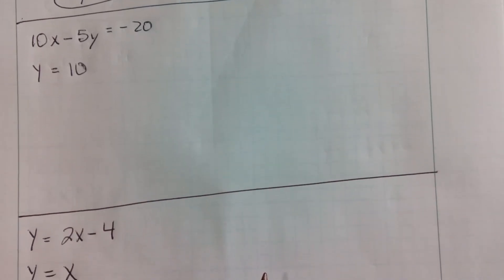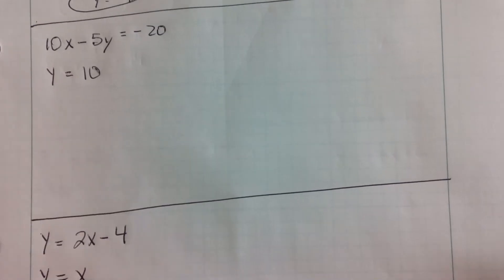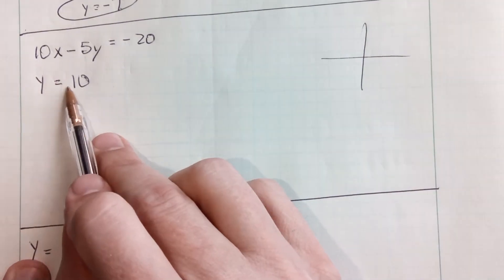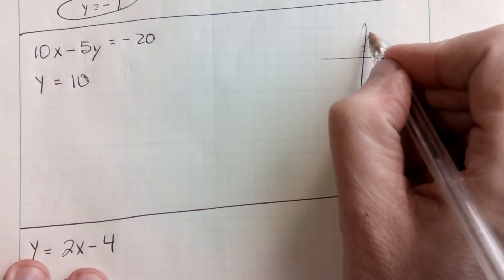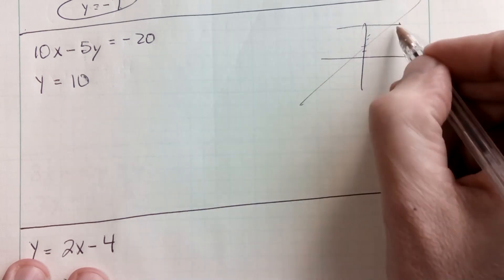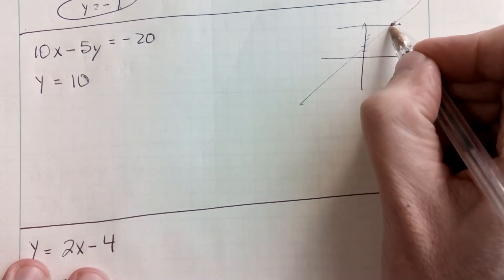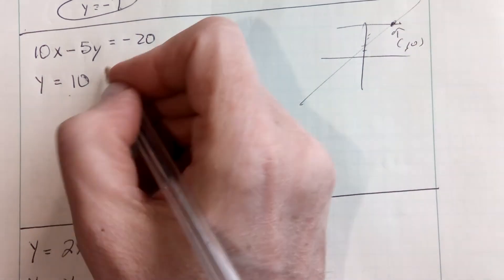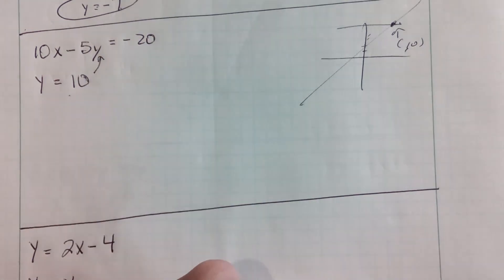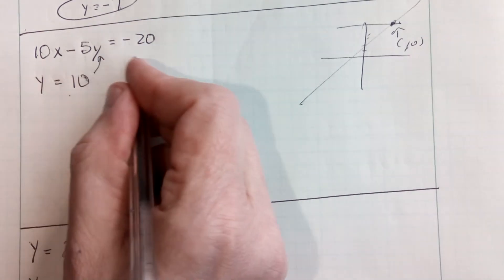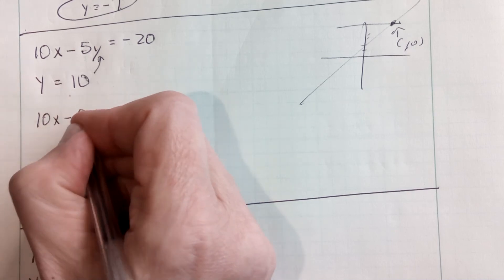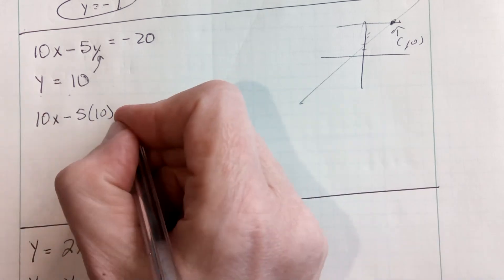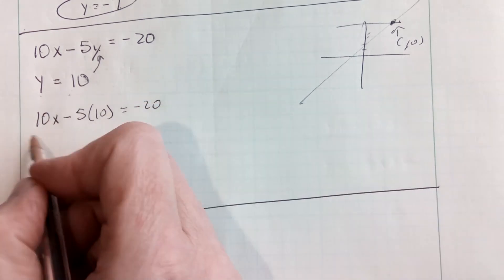They might actually give you a horizontal line. All I know is that this bottom equation, y equals 10, is a horizontal line way up here at 10 somewhere. I have some other line that's eventually going to intersect it. But that point where they intersect is going to have a y value of 10. So I'm going to replace the y in that first equation with 10.